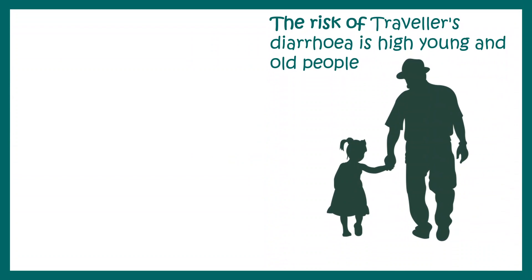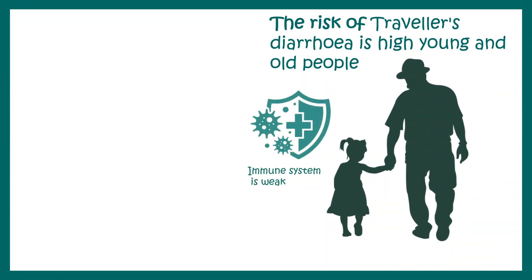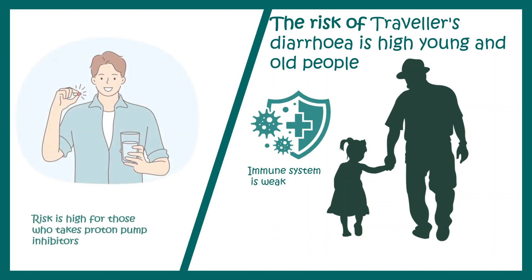The risk of traveler's diarrhea is very high in young and elderly people because they don't have a robust immune system. Additionally, if you are taking proton pump inhibitors, which reduce gastric acidity, this can increase the chances of traveler's diarrhea. Gastric acid normally kills many pathogens that enter the body with food or water.